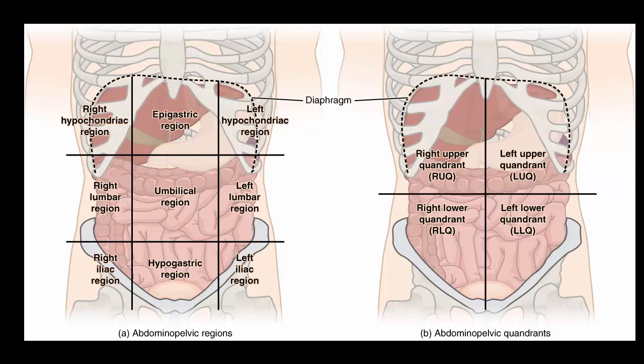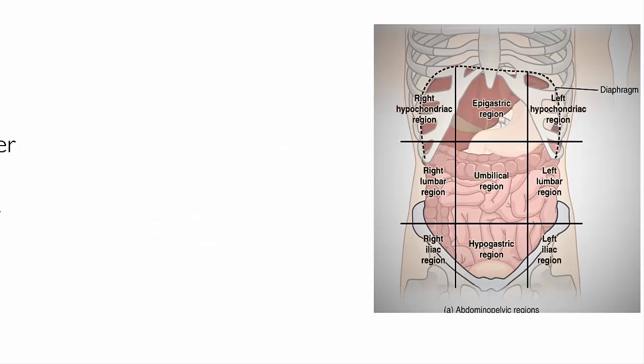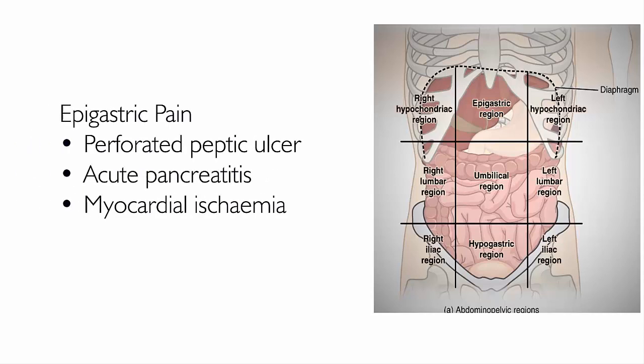Generalized abdominal pain can be caused by early appendicitis, intestinal obstruction, acute pancreatitis, mesenteric ischemia, or peritonitis. Epigastric pain can be caused by perforated peptic ulcer, acute pancreatitis, or myocardial ischemia.